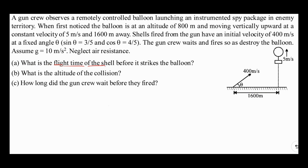What is the flight time of the shell before it strikes the balloon? The angle of projection is fixed, so there is a fixed path on which this shell is going to move. When that fixed path cuts the path of the balloon, the balloon can be destroyed at that point. So when the shell reaches this vertical line, which is at 1600 meters distance away, only then the balloon can be destroyed.